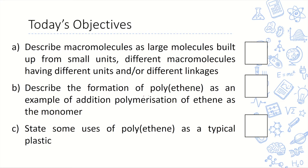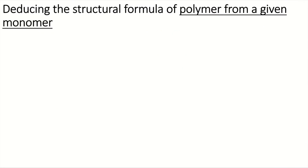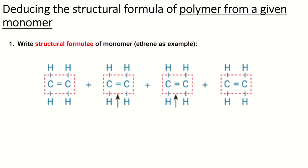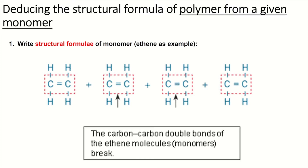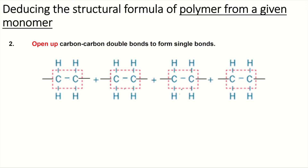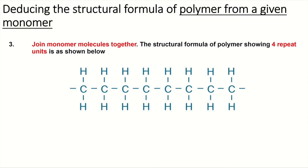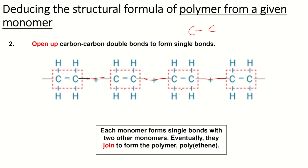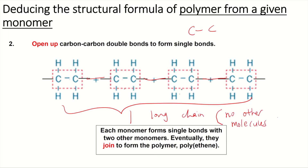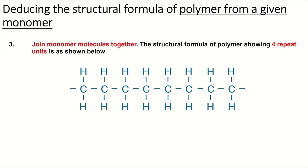Revisiting polyethene: the monomer is ethene, which has a C=C double bond. What happens is the double bond breaks — you open up the double bond, forming a C-C single bond — and the monomers join together to form one long chain. In this reaction, all I do is join them together; no other molecules are produced. They are all added together to form one big compound, one long chain. This is what we call addition polymerization.